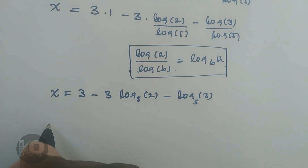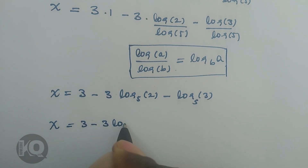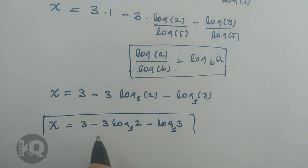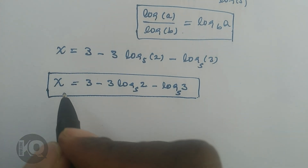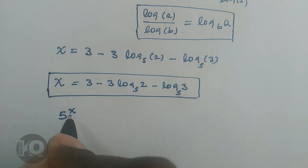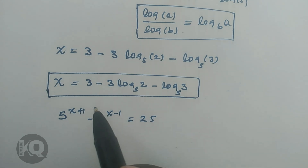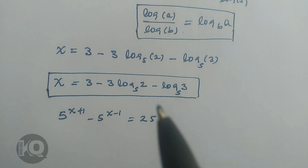So the final value of x is equal to 3 minus 3 log base 5 of 2 minus log base 5 of 3. This is the value of x that satisfies our equation. By substituting this value into 5 to the power of x plus 1 minus 5 to the power of x minus 1 equals 25, you can verify whether this value satisfies the equation yourself.